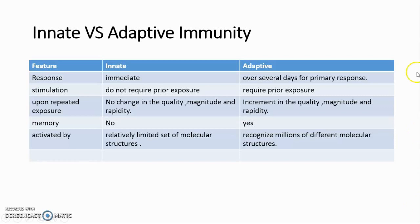Comparative features of innate and adaptive immunity: Innate immune responses to a microbe are immediate and do not require prior exposure to the microbe. In contrast, effective adaptive immune responses to a newly introduced microbe develop over several days as clones of lymphocytes undergo expansion and differentiate into functional effector cells.